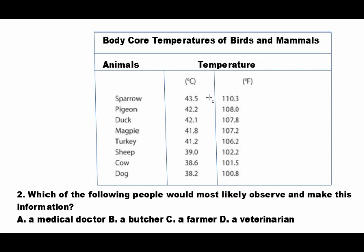Number two is about the chart above showing the body core temperatures of birds and mammals. The animals in the sample include sparrow, pigeon, duck, magpie, turkey, sheep, cow, and dog — with body temperatures listed in Fahrenheit. For example, the sparrow is 110.3°F. The question is: which of the following people would most likely observe and record this information? Is it A) a medical doctor, B) a butcher, C) a farmer, or D) a veterinarian?